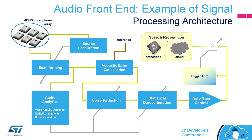Beamforming means listening in a specific direction — we want to listen to the speaker if we know where he is. Source localization answers the question: where is the speaker? Acoustic echo cancellation — which I will explain later — basically means that if our device is reproducing audio, it knows what audio it's playing back, so it can do signal processing to remove that audio from the captured voice.